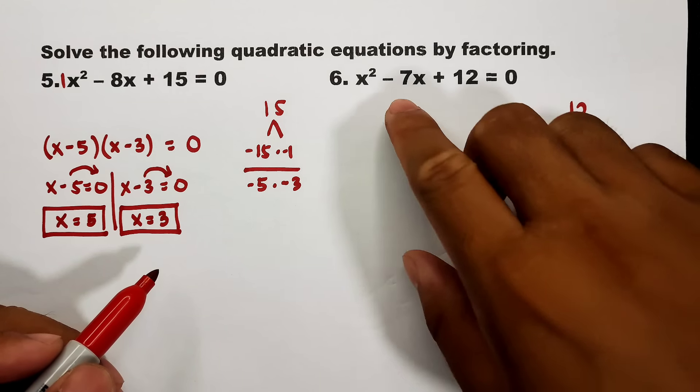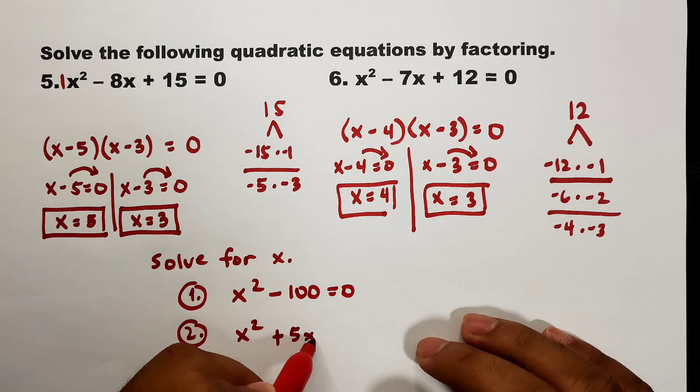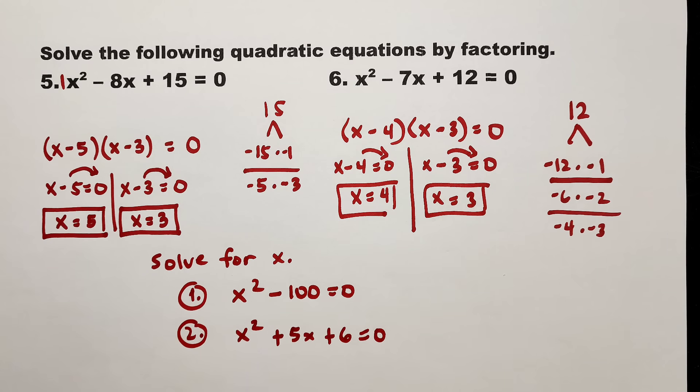Now, as our routine in our tutorial videos, I will give you practice problems — please comment down below your answers. Number 1: x² - 100 = 0. Number 2: x² + 5x + 6 = 0. If you're new to my channel, don't forget to like and subscribe and hit the bell button for the latest uploads. Again, it's me, Teacher Gon. Maraming maraming salamat. Bye-bye!